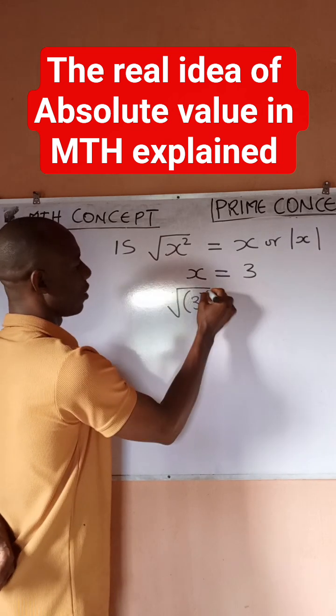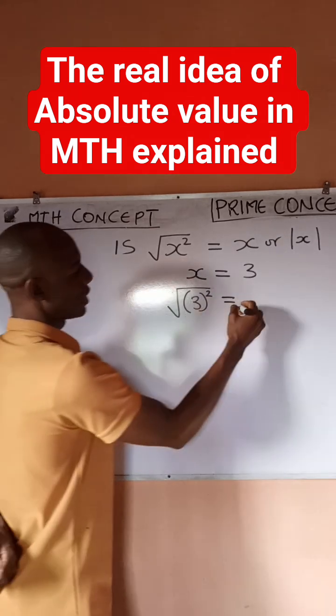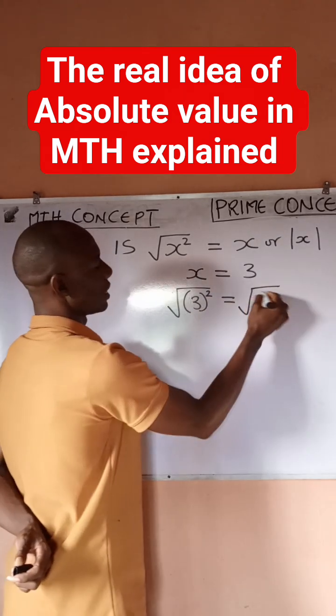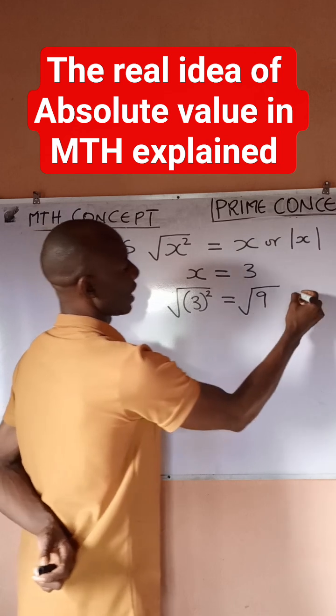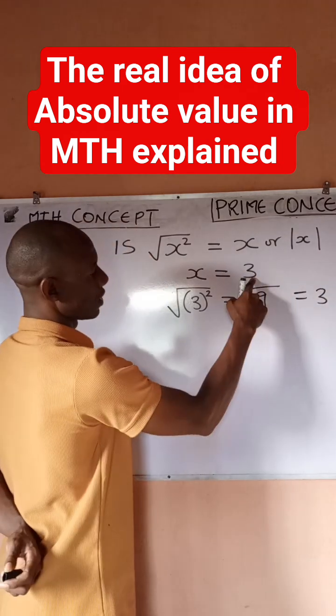So for this we're going to see that we have the square root of 3 squared, and this would give me 3 squared is actually going to be 9, and then square root of 9 is going to give me 3. So you see that we got 3, which is x.